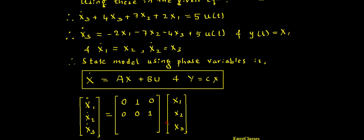Lastly, X3-dot can be realized using the expression: here I have minus 2 times X1, so this must be minus 2; then minus 7 times X2, so this must be minus 7; and minus 4 times X3, so this must be minus 4. Plus there is 5 times u(t), which I also need to consider in the matrix.